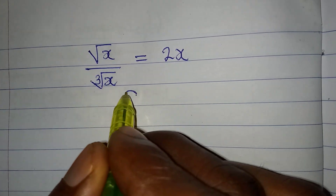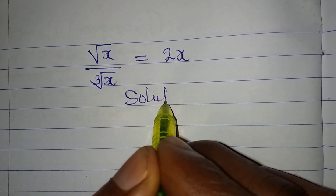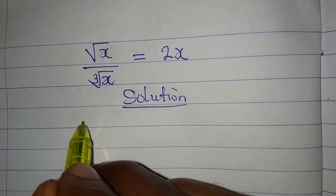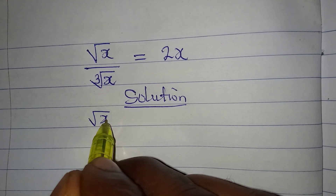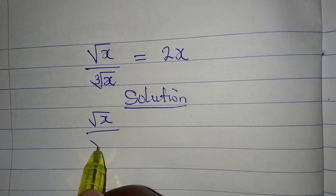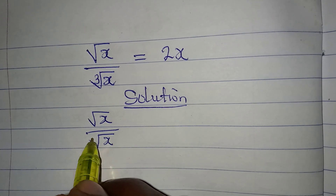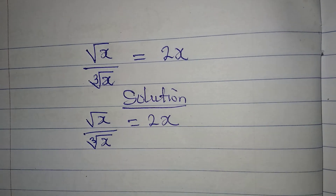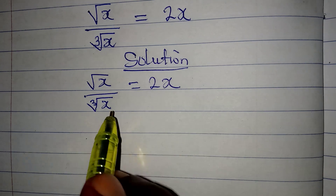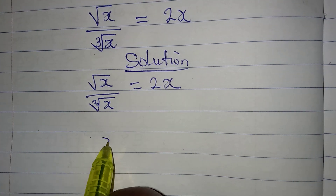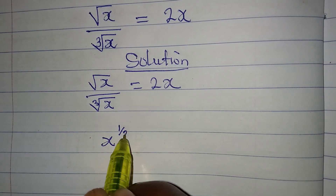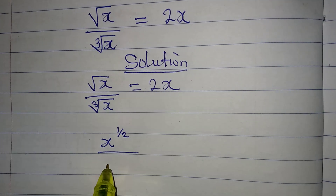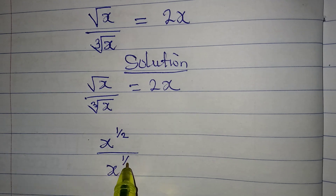Hello everyone, let's solve this problem right away. Welcome to Few Cool Mathematics. We have square root of x over the cube root of x equal to 2x. Square root of x is x to the power of 1/2, over x to the power of 1/3.